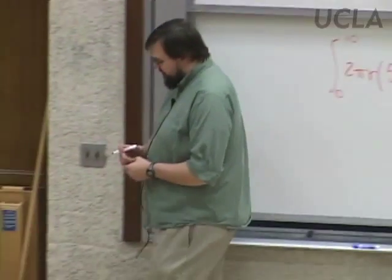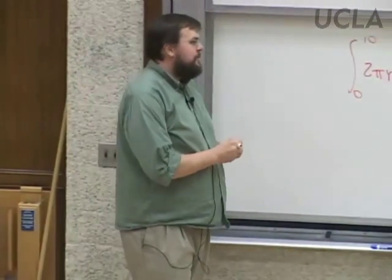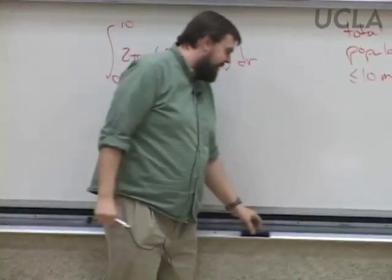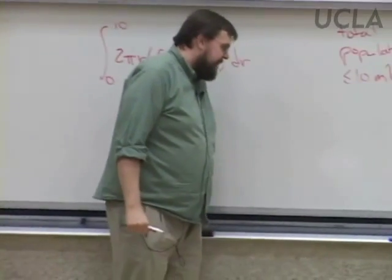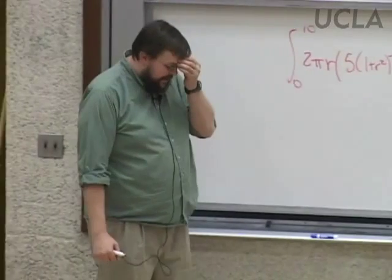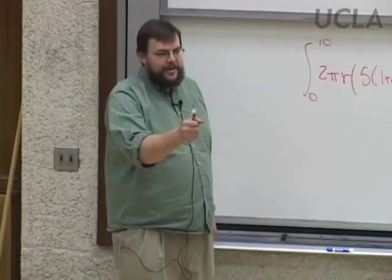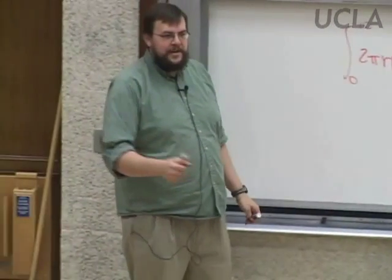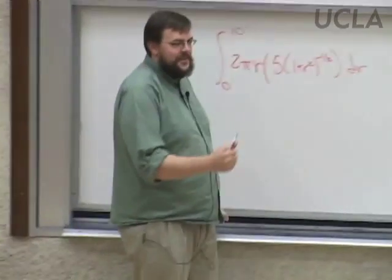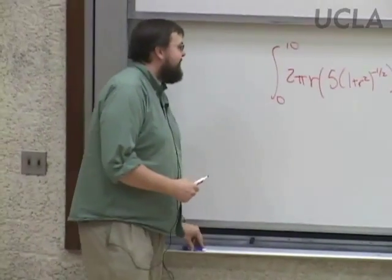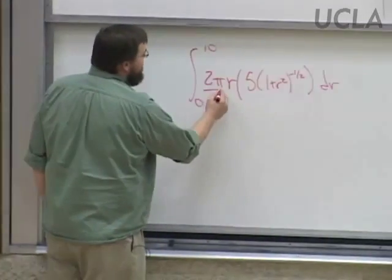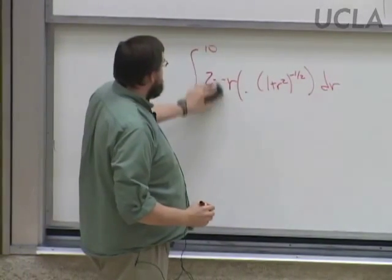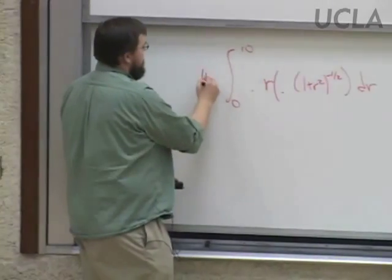So I want the integral from 0 to 10 of 2πR · 5(1 + R²)^(−1/2) dR. Within 10 miles means I start at the city center 0 and keep going until I hit 10 miles out. I discovered on Monday that I'm getting really bad at arithmetic the further I go — I had 2 plus 8 and then did 2 times 8. But don't worry, you don't have to lose points for that on the final.